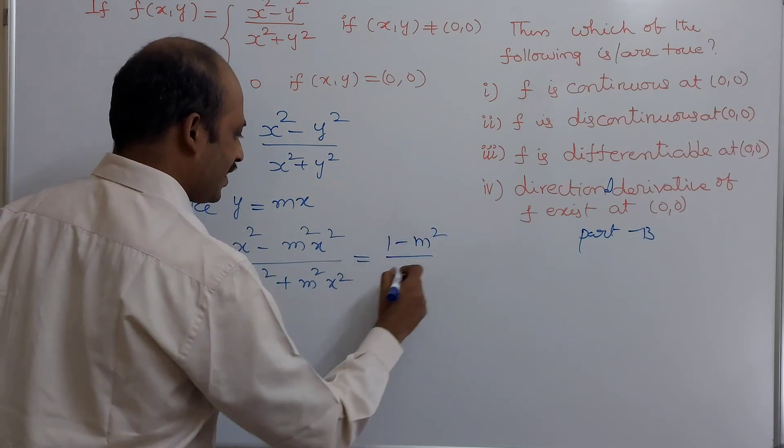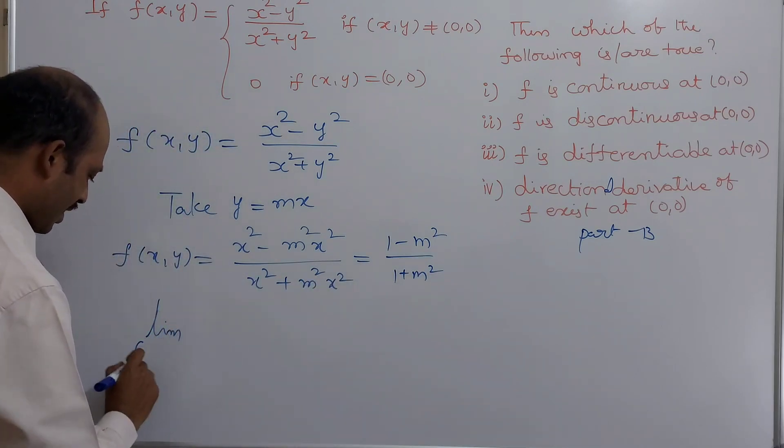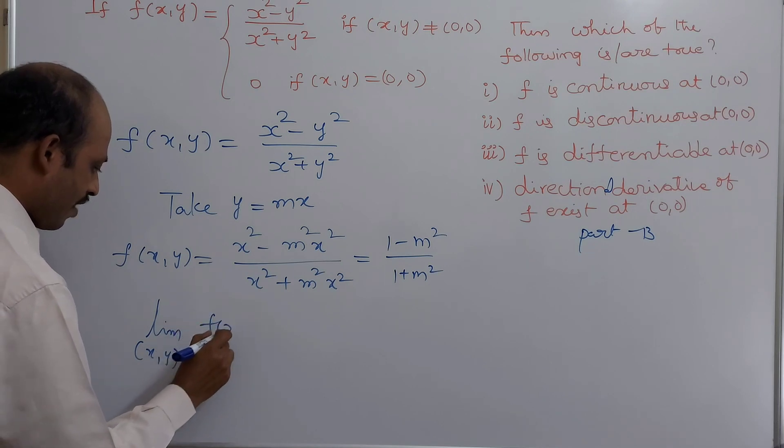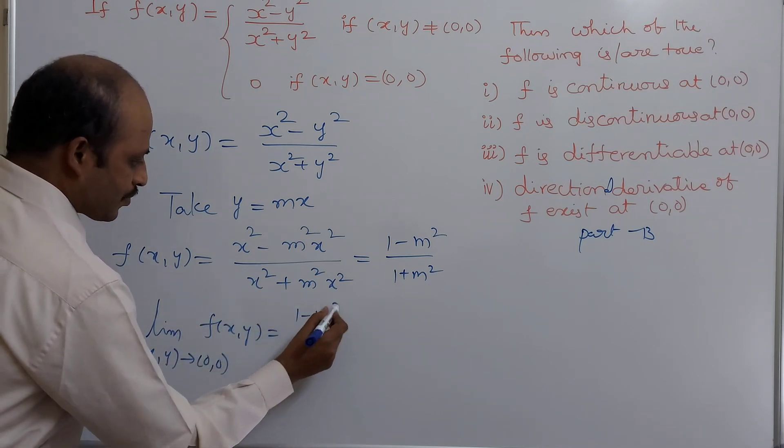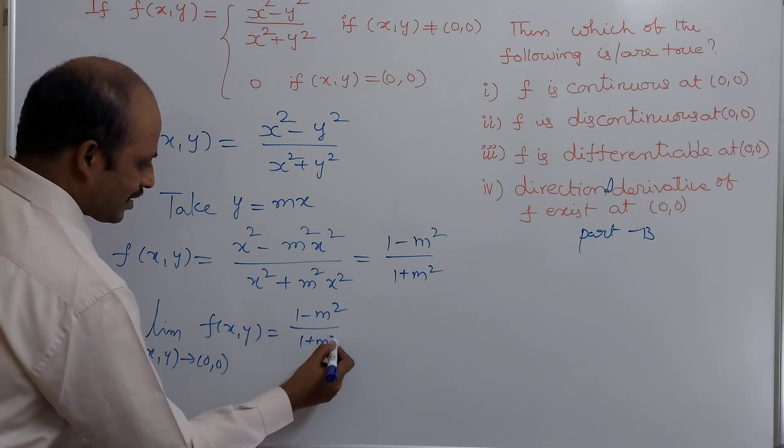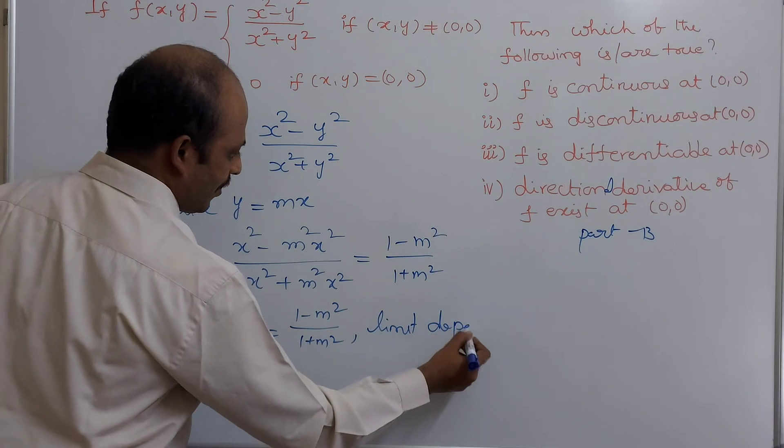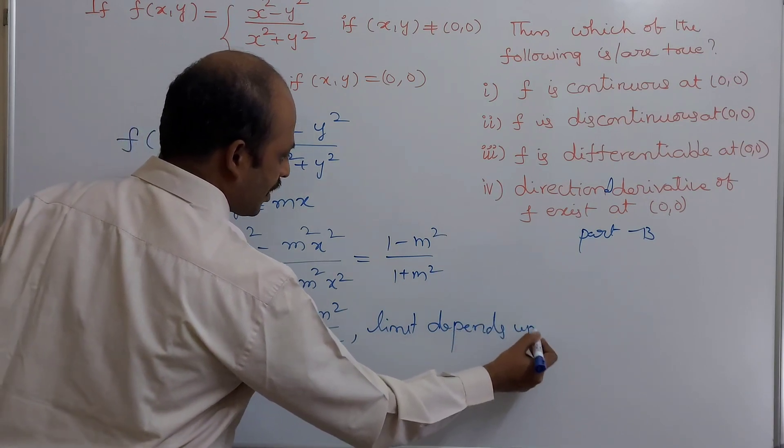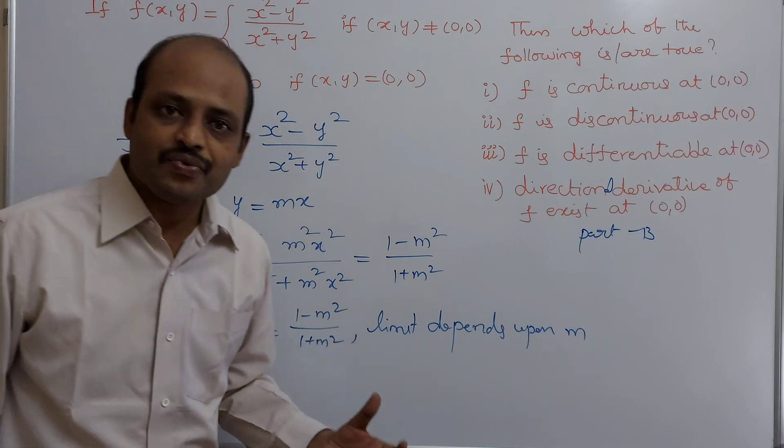We get 1 minus m square divided by 1 plus m square. It means limit as (x,y) tends to (0,0) of f(x,y) is equals to 1 minus m square divided by 1 plus m square. It means limit depends upon m. Limit depends upon m.